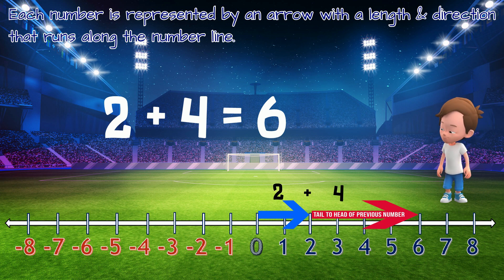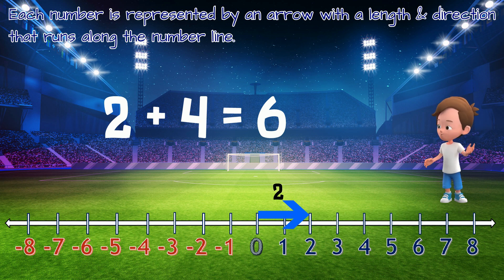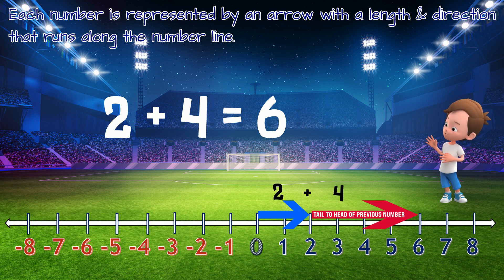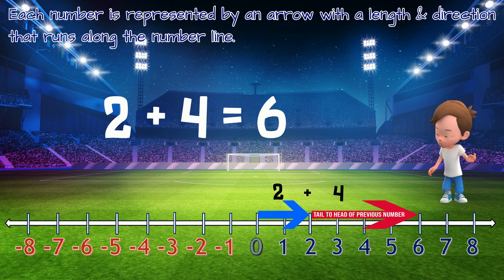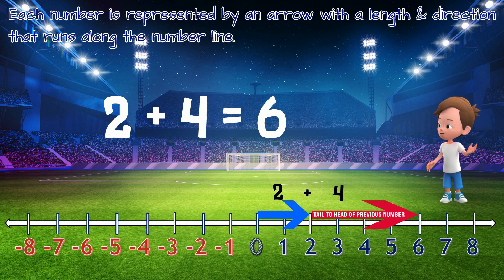For example, 2 plus 4. The arrow tail for the first number, 2, is fixed at 0, with its head ending at 2. Then the arrow tail for the next number, 4, is fixed at the head of the previous number, 2, with its head ending at 6. Hence the sum is 6.